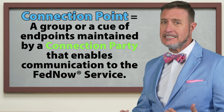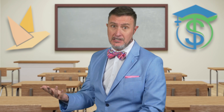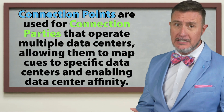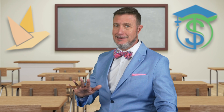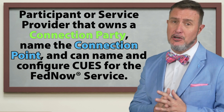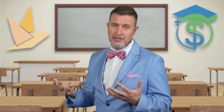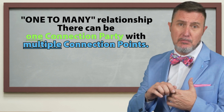Then, connection point — what is this? This is a group or a queue of endpoints maintained by a connection party that enables communication with the FedNow service. Who sets this up? This one's also set up by the Federal Reserve Banks, based on information given during onboarding or requested from the FRB Services Support Center. Why is a connection point used? It's used for connection parties that operate multiple data centers, allowing them to map queues to specific data centers and enabling data center affinity — I'll explain it better soon. A participant or service provider that owns a connection party gets a name, the connection point, and they can name and configure queues that are outgoing from the FedNow service. The connection point ID is generated by the FedNow service. The relationship here is a one-to-many relationship, meaning one connection party can have multiple connection points.